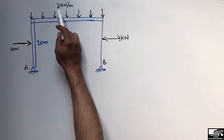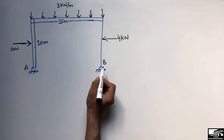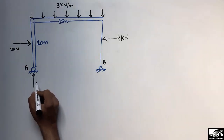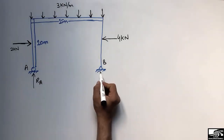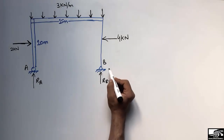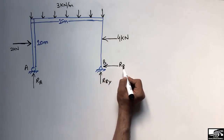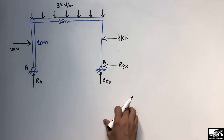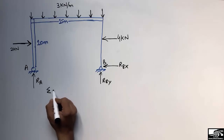Point A is a roller support, so it will have only a vertical reaction R_AY. Point B is a hinge support, so it will have both a vertical reaction R_BY and a horizontal reaction R_BX. To find the support reactions, I will take the summation of moments.